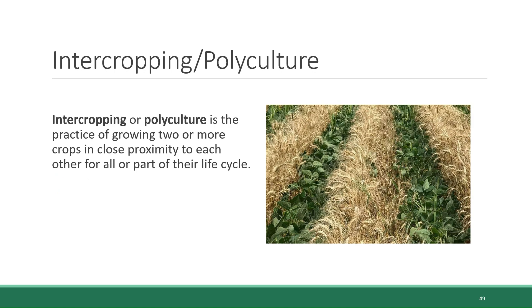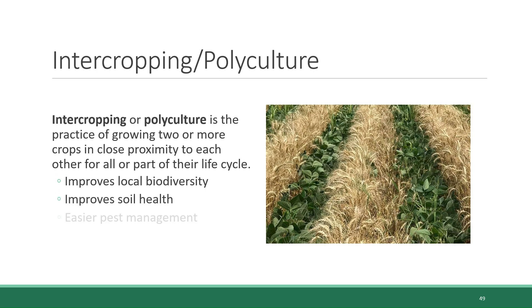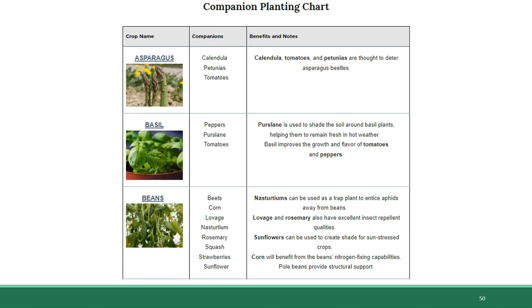Another alternative agriculture approach that can improve pest control as well as other factors is intercropping, also known as polyculture. Intercropping is the practice of growing two or more crops in close proximity to each other for all or part of their life cycle. It's an alternative to monoculture that improves the biodiversity of the local ecosystem, improves soil health, and makes pest management easier — because when you only grow one thing in an enormous plot, you've created a seamless smorgasbord for pests that like to eat that plant. It's also possible to choose to intercrop plants that have very specific symbiotic benefits toward one another. When this occurs on a farm level, it's called intercropping, but when it occurs on a garden level, it's called companion planting.